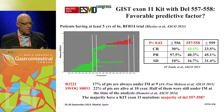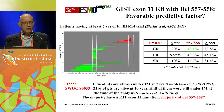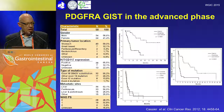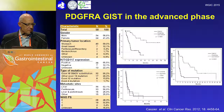Even within the exon 11 group, the deleted 557 or 558 codons in exon 11, while a negative prognostic factor, appear to be a positive predictive factor — these patients do better with imatinib. With respect to PDGFR alpha in the advanced phase, the D842V mutation, the commonest mutation in exon 18, does poorly with imatinib and does just as badly with sunitinib. The group with D842V does not do well when they receive imatinib.